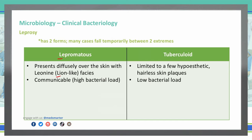The lepromatous form is more communicable because of its high bacterial load, whereas the tuberculoid form, while it can be passed on, has a low bacterial load, which makes it less likely to be transmitted to people in the surrounding areas.